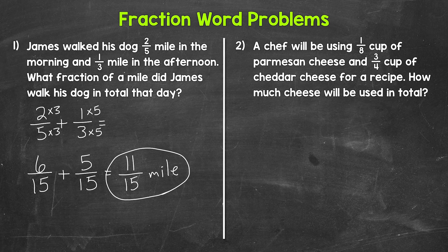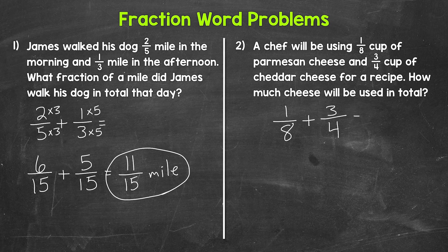Let's move on to number two where we have a chef using one-eighth of a cup of Parmesan cheese and three-fourths of a cup of cheddar cheese for a recipe. How much cheese will be used in total? The cheeses are being combined, so we need to find the total by adding. We need to do one-eighth plus three-fourths. We do not have a common denominator, so that's what we need to do first. The lowest common denominator for eight and four is eight, so let's rename both fractions with that denominator and then add.